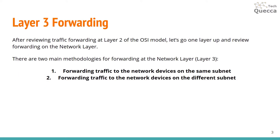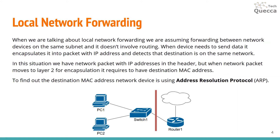In my last video I briefly discussed forwarding at layer 2 of the OSI model. Today I would like to go one layer up to layer 3 and discuss forwarding on the network layer. There are two main methodologies: the first when we need to send traffic to devices on the same subnet, and the second when we need to send traffic to devices on a different subnet.